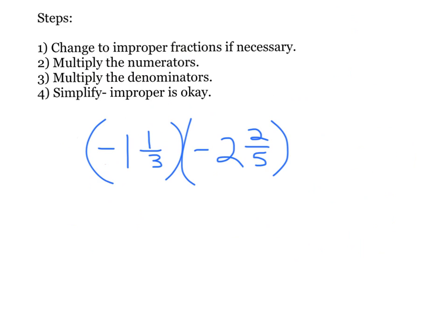Next problem — I have two mixed numbers. I'm going to quickly change both to improper fractions. I times and add the top: 3 times 1 is 3, plus 1 is 4, so I get 4 thirds. Don't forget the negative sign — I'll put it on top with a dot for times. Then 5 times 2 is 10, plus 2 is 12, so it's negative 12 fifths.